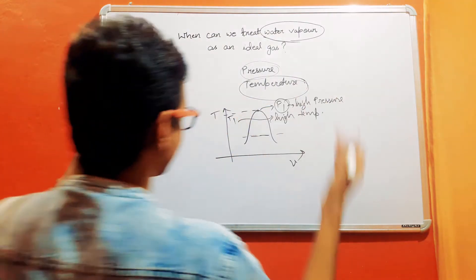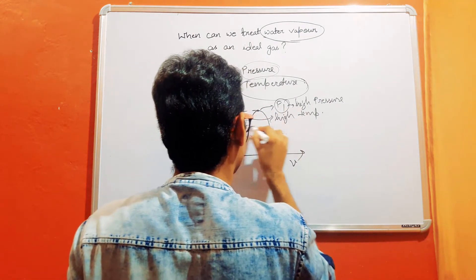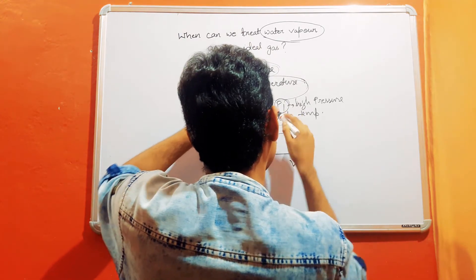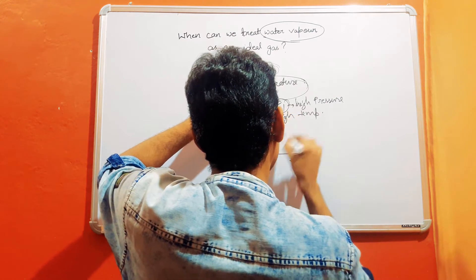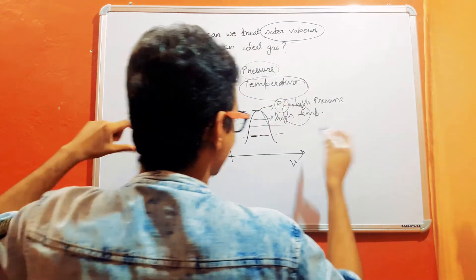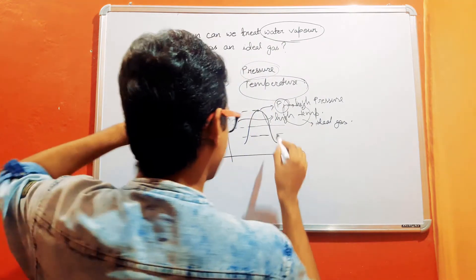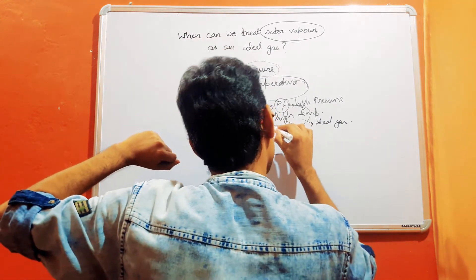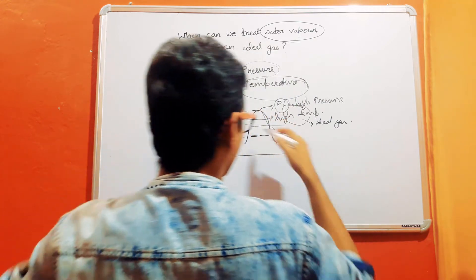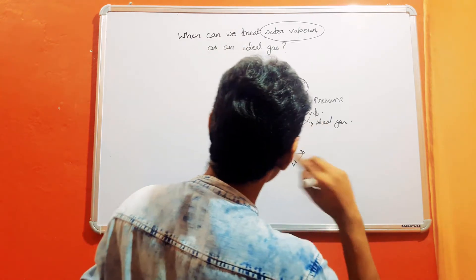Also, at high pressure, the gas must be away from the saturation region in order to be considered an ideal gas. At lower pressure, if the gas is nearer to the saturation region, we can still consider it as an ideal gas, but at high pressure the gas must be away from the saturation region to be treated as an ideal gas.